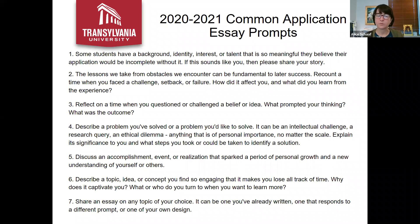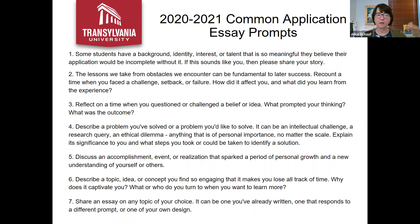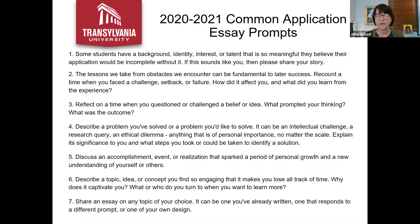When students read prompt three, they often go straight to religion, but keep in mind especially right now — beliefs or ideas might be a community norm you challenged, a rule at school, or something within your family. Number four: 'Describe a problem you've solved or a problem you'd like to solve — an intellectual challenge, a research query, an ethical dilemma, anything of personal importance. Explain its significance to you and what steps were taken to identify a solution.'